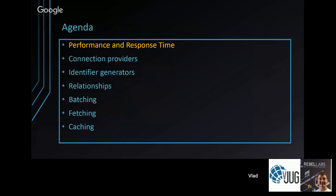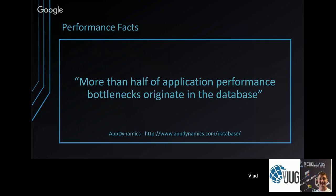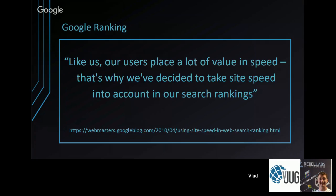Most applications — as AppDynamics, an application performance monitoring tool, has realized — have about half of their performance bottlenecks originating in the data access layer. It's not just the database itself that's to blame, but how you interact with and access the database that can become a problem.